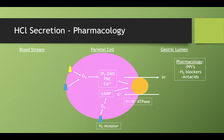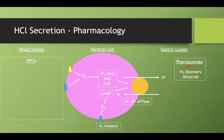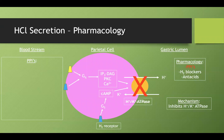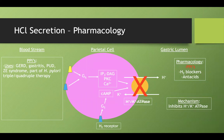Let's briefly discuss the pharmacology of medications that inhibit hydrogen ion secretion or GERD symptoms. Starting with PPIs: their mechanism is to directly inhibit the hydrogen-potassium ATPase. That's what makes them so effective — no matter which pathway is activated, the end result is enzyme inhibition. PPIs are used in GERD, gastritis, peptic ulcer disease, Zollinger-Ellison syndrome, and as part of H. pylori therapy.